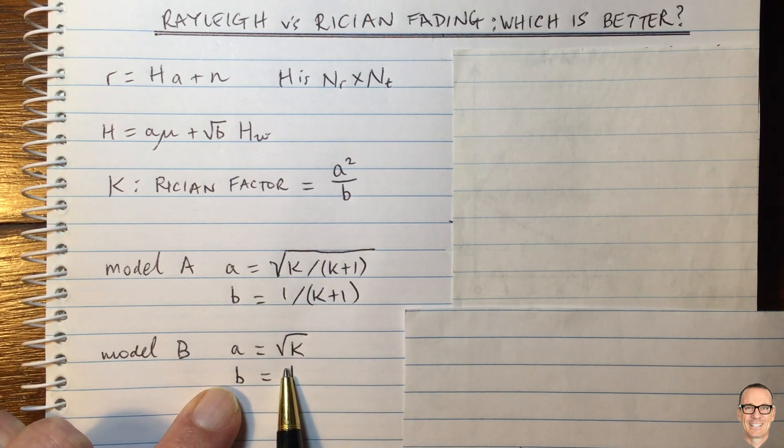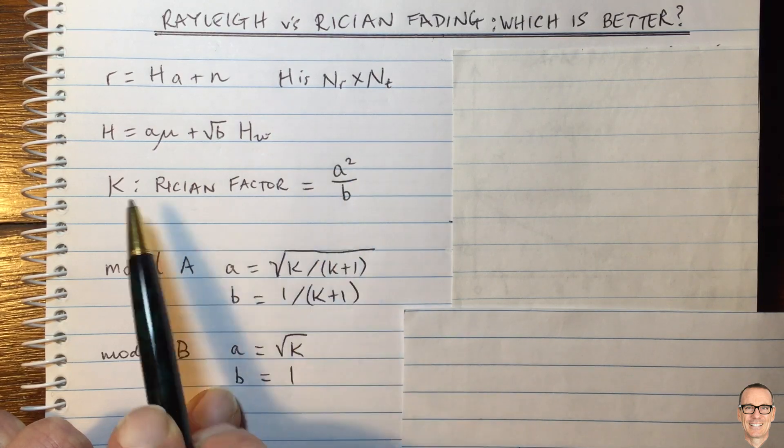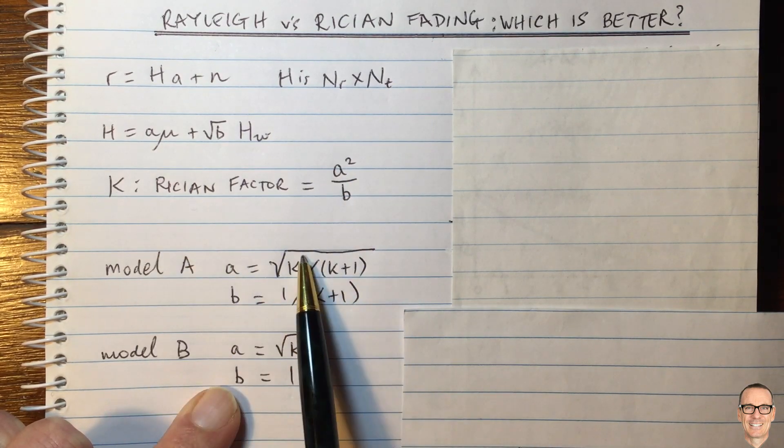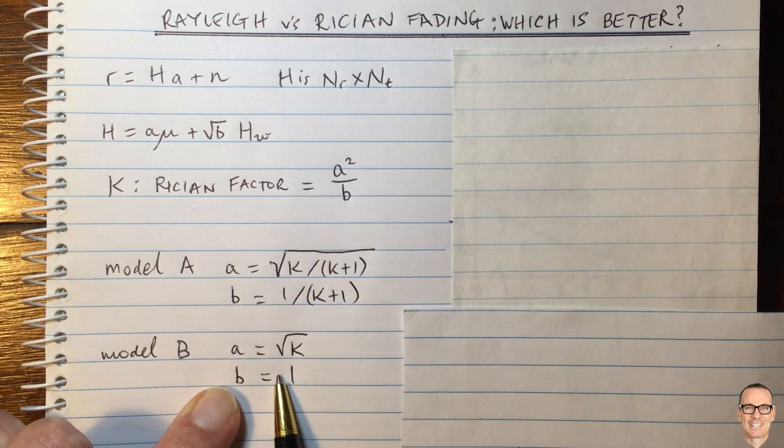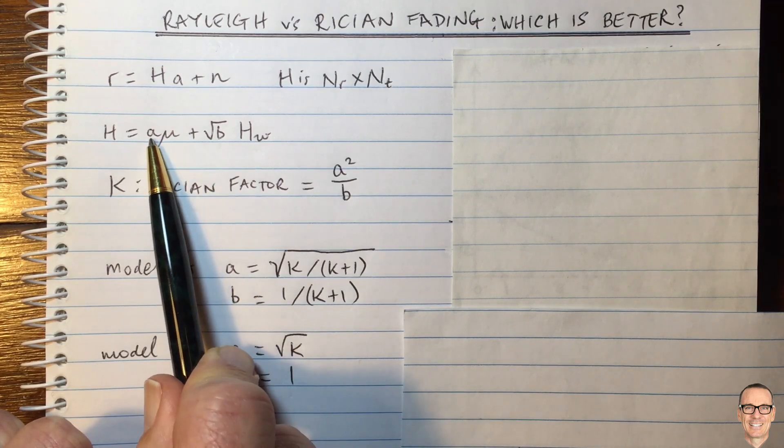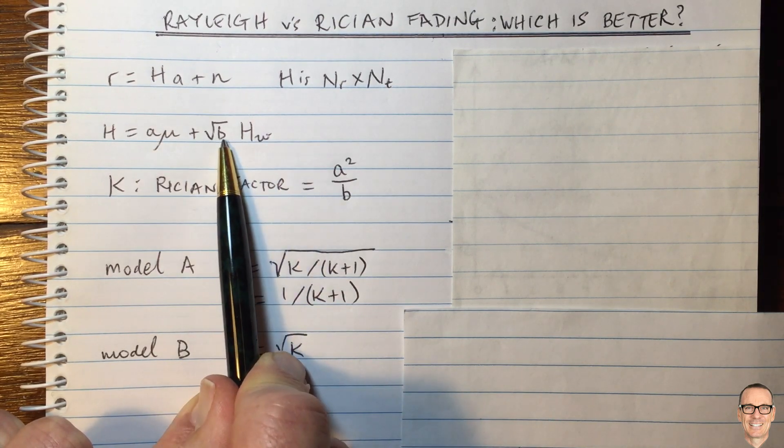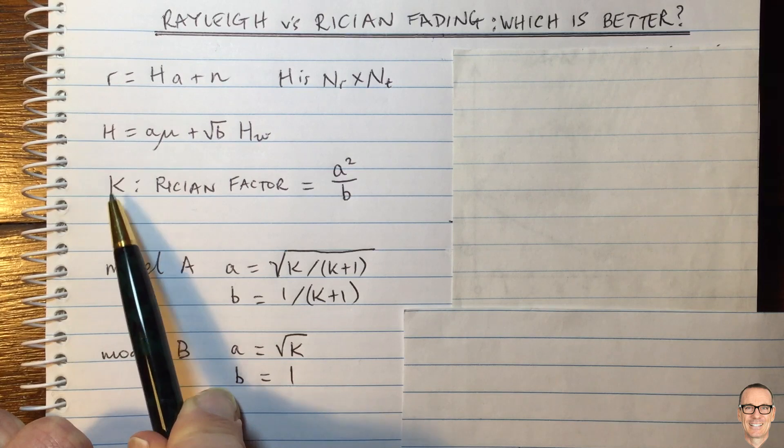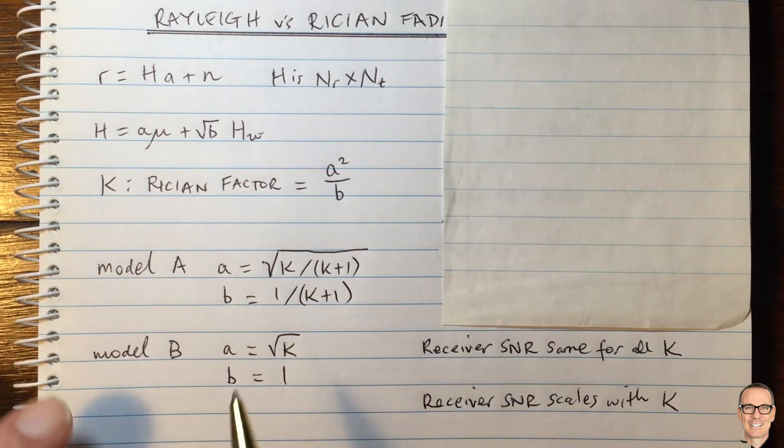Both of these models give you the same K factor. So they're just two different ways of normalizing the power and exploring the relationship between the different line of sight component, dominant component, and the reflective component for the same K factor.